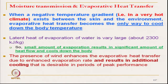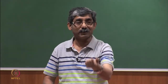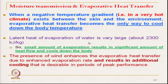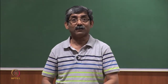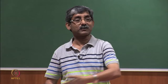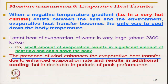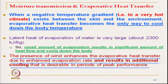When there is a negative temperature gradient at higher climatic temperature — higher than our body temperature — the only phenomenon for cooling our body is by evaporative heat exchange. The latent heat of evaporation of water is very large: 2300 kJ/kg. That means a small quantity of evaporation actually transmits a significant quantity of heat. The presence of air also enhances this heat transmission because evaporative moisture gets removed and additional cooling takes place. At windy conditions, cooling will occur.